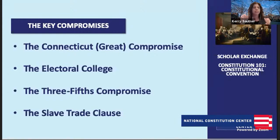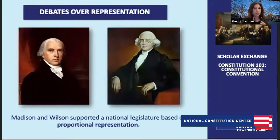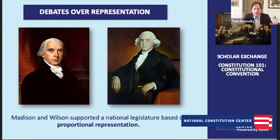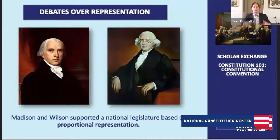The big four compromises: the Great Compromise, the compromises around the Electoral College and the presidency, the Three-Fifths Compromise, and the slave trade clause. Let's start with the Connecticut or Great Compromise. There were battles between small states and large states over how to distribute power in the new government — especially how to organize Congress. This was critically important because the founding generation predicted Congress would be the most powerful part of the government.